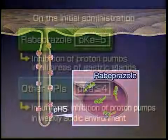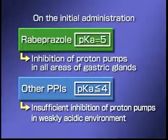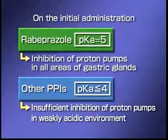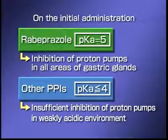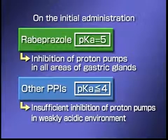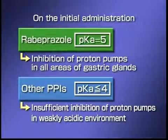As you can see, rabeprazole can achieve extensive inhibition of proton pumps in all areas of gastric glands, even on initial administration. The number of proton pumps remaining uninhibited is much smaller with rabeprazole in comparison with the other proton pump inhibitors. This is why rabeprazole is fast-acting and increases the intragastric pH even on initial administration.